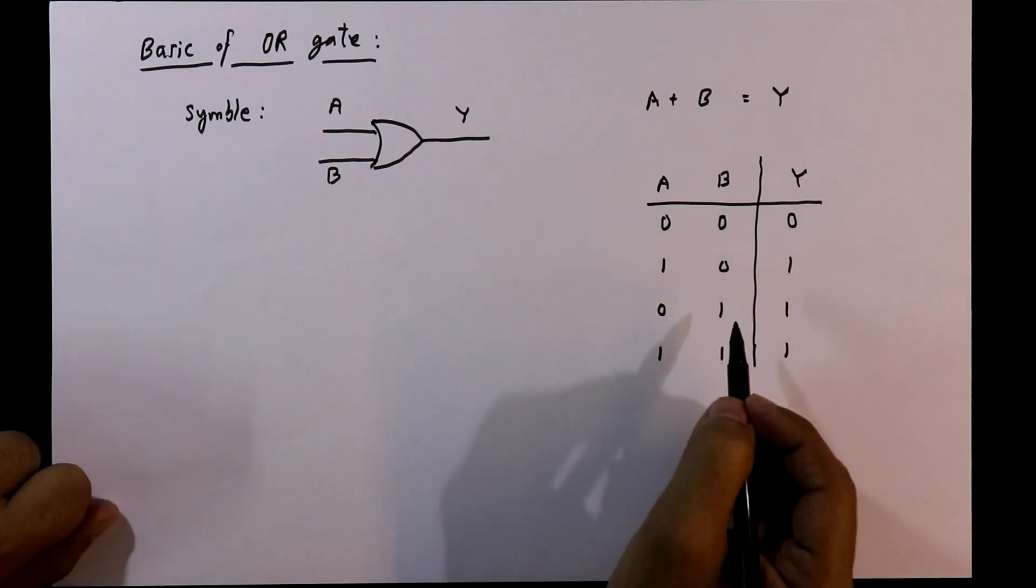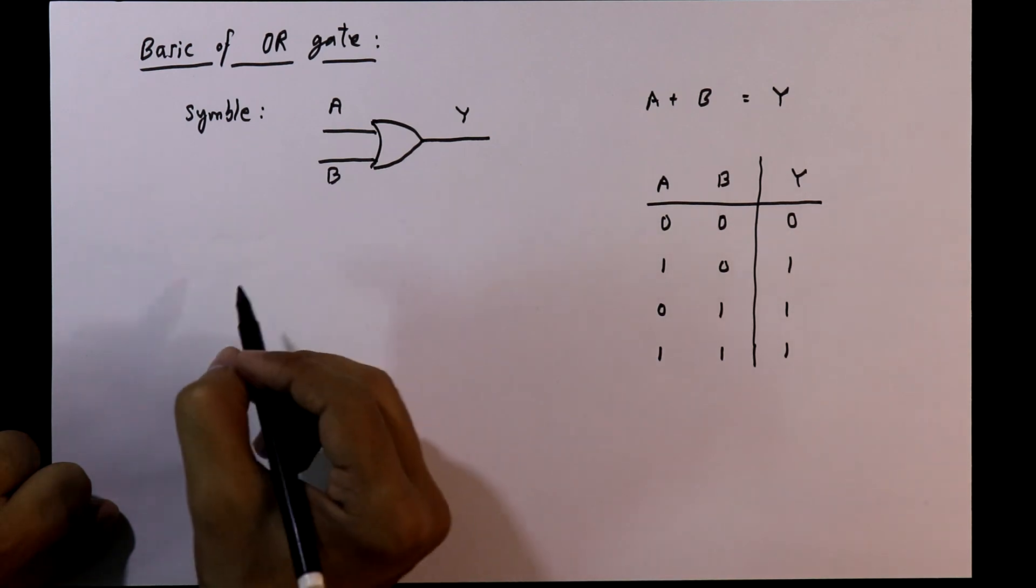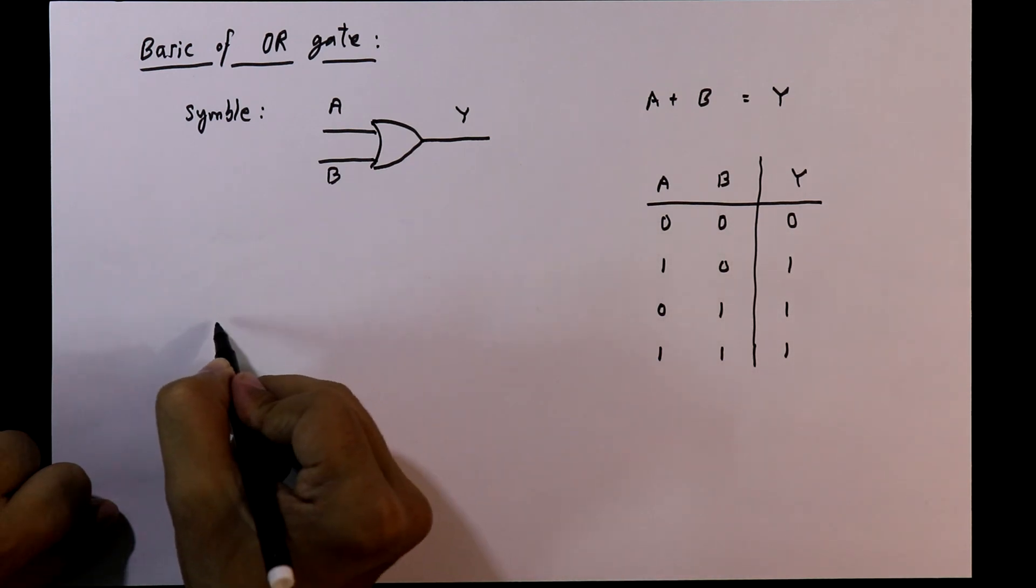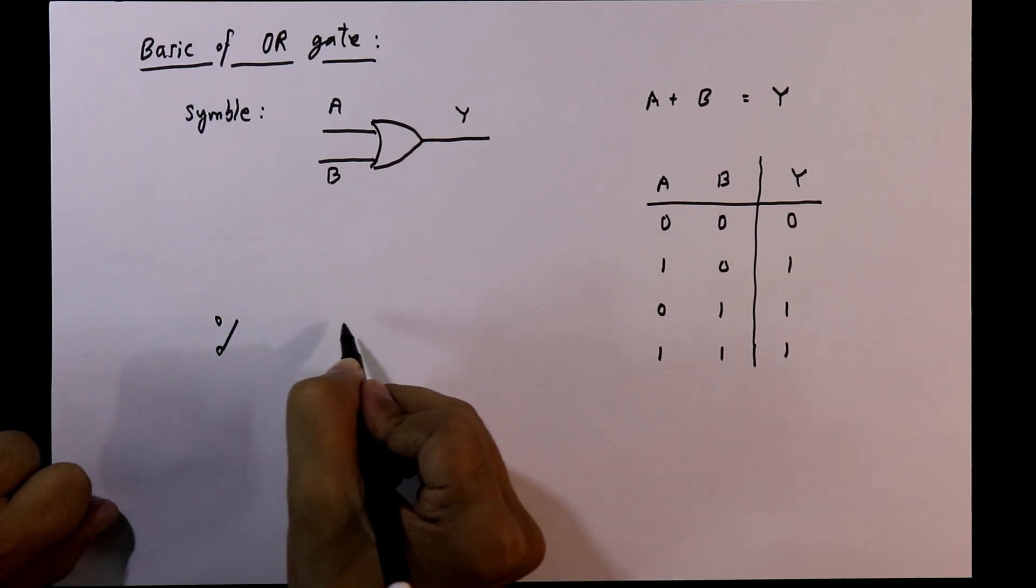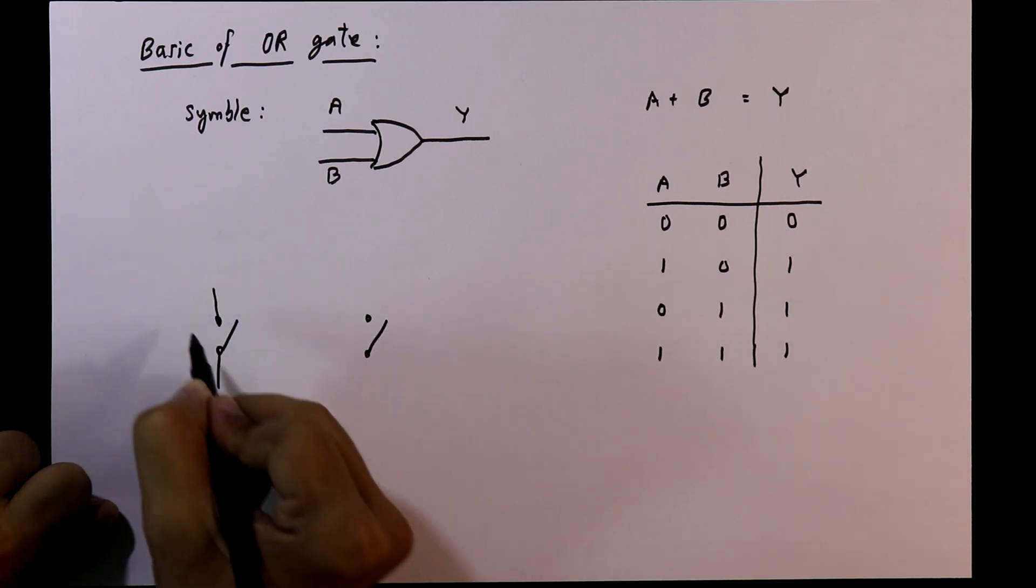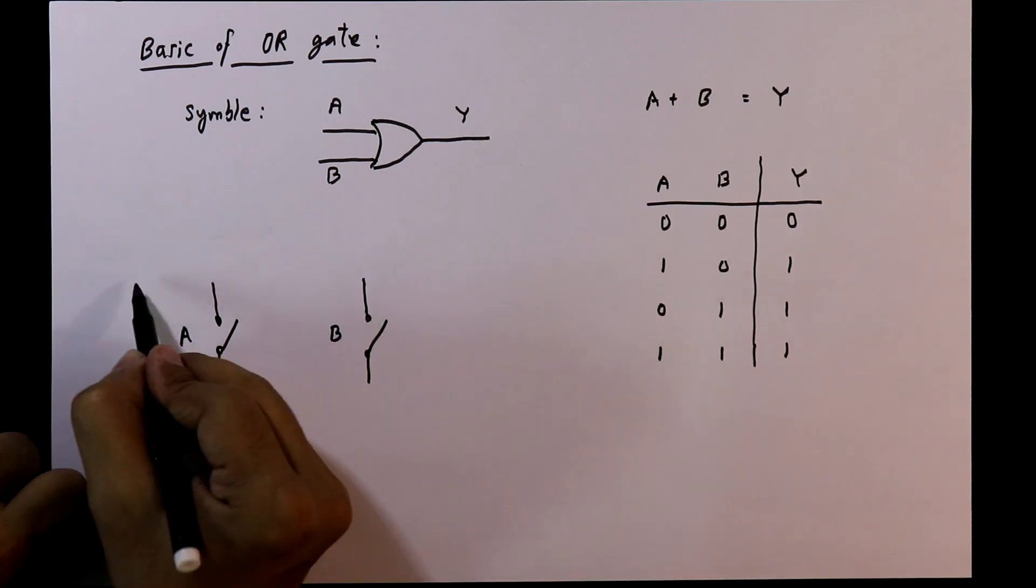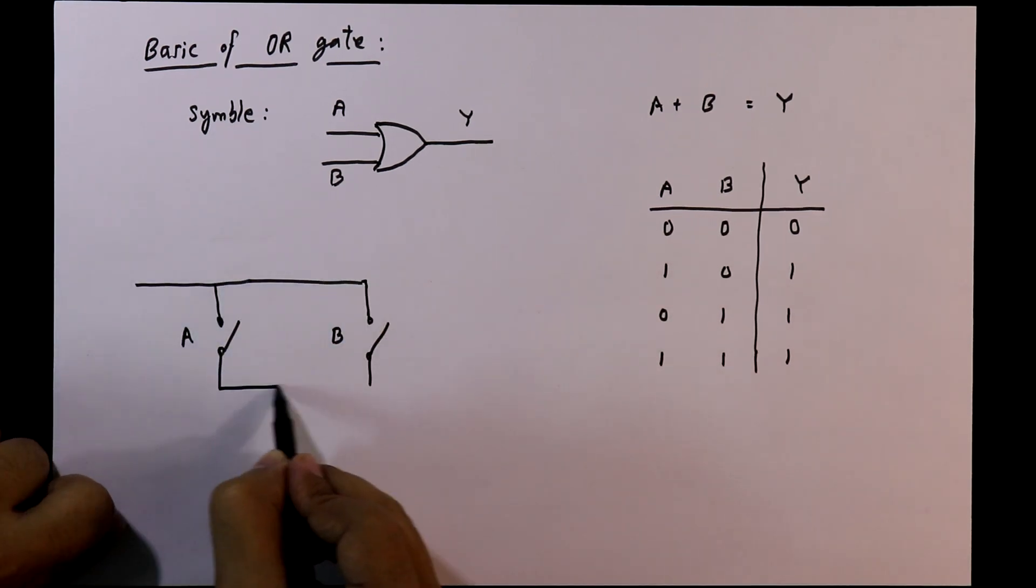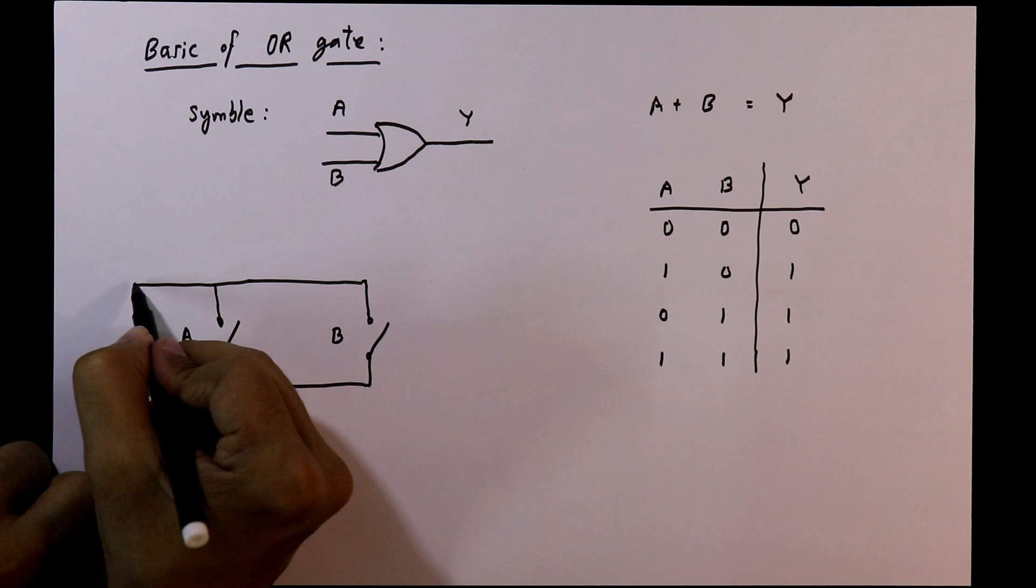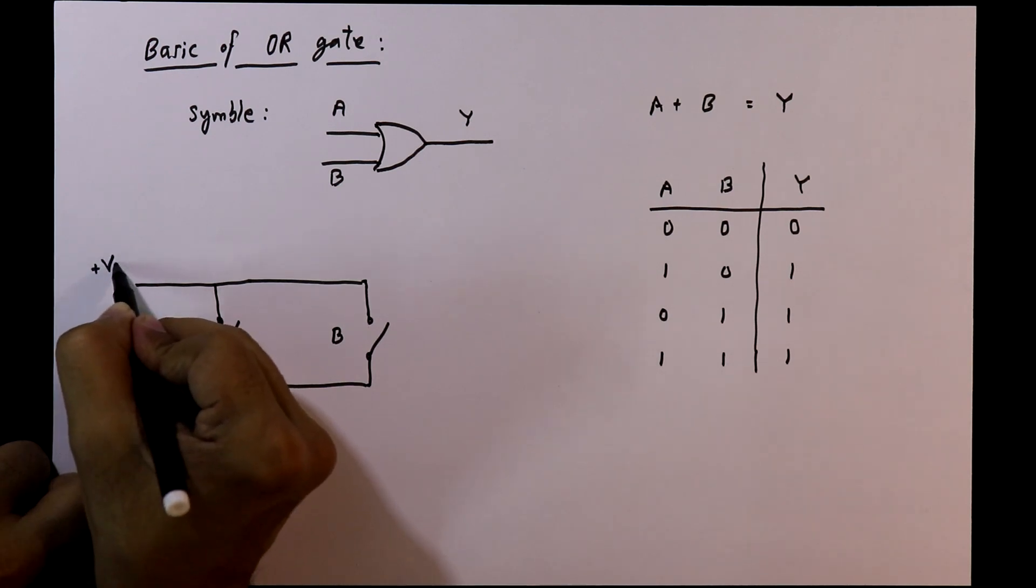And we will verify this truth table with basic switches. We will take two switches like this. The switch A and switch B. And both of them are parallelly connected.